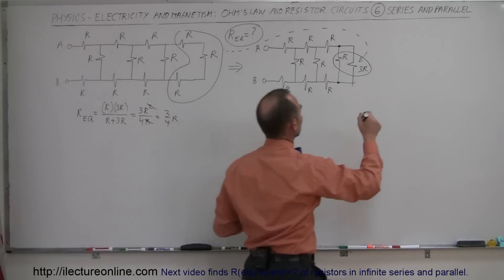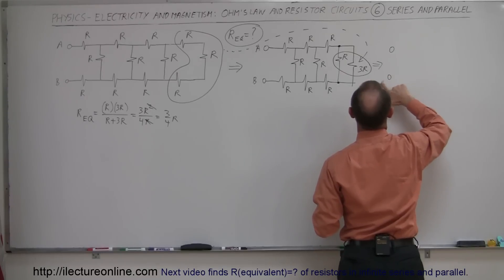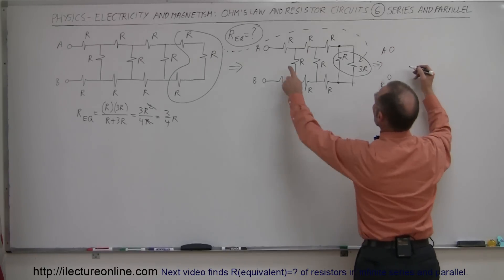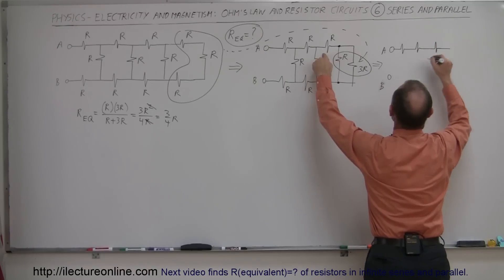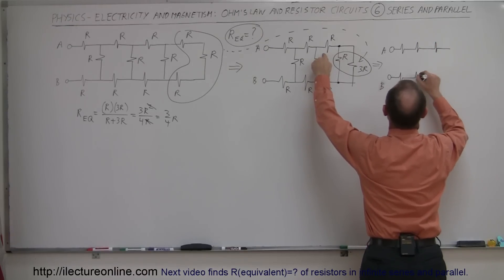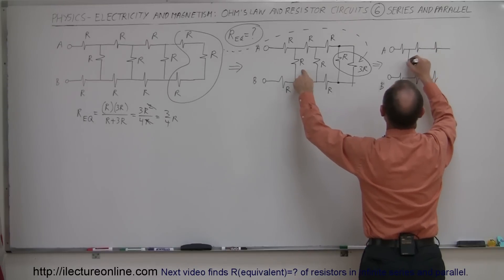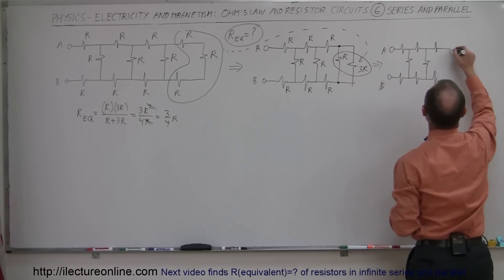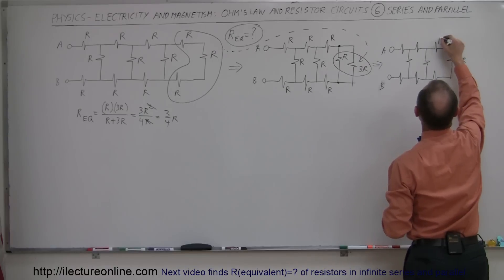So these two resistors combined turn into a single equivalent resistance of three-quarters R. Let's draw that. The next circuit has terminals A and B, and we still have three remaining resistors. Those two parallel resistors combined form a single resistor of three-quarters R back here, and everything else is still R.